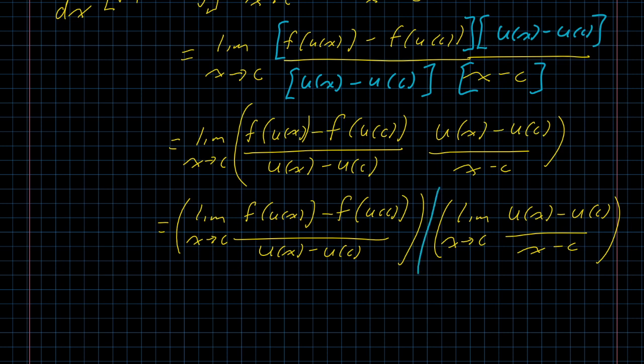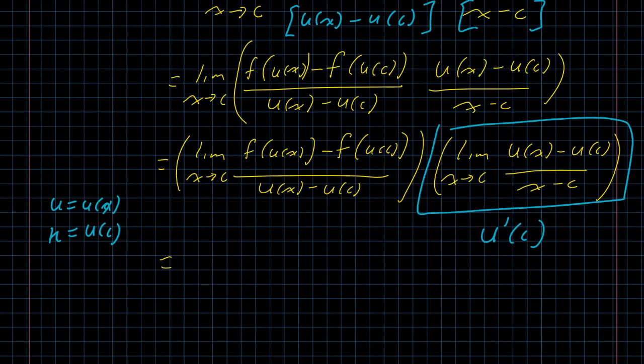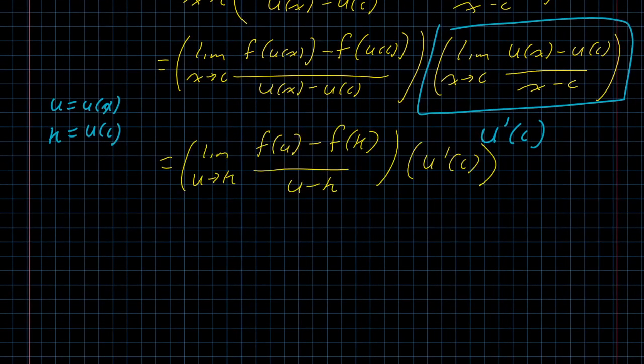The second fraction has a very familiar form. This is the limit definition of u prime of c. The first one is a little bit harder to see, but we can do a substitution. We're going to just use u. If I say u is u of x and k is u of c, then I can rewrite this limit. And even though the variables are not what we're accustomed to, this is definitely f prime of u.